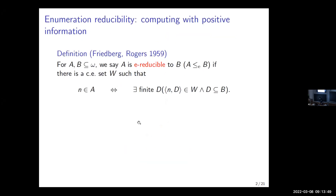So we need to talk first about what is enumeration reducibility, so I'll try to give an introduction in case you haven't seen this before. For A and B subsets of omega, we say that A is enumeration reducible to B if there is a c.e. set W — which we think of as an enumeration operator — such that N lies in A if and only if there is some finite set D such that the pair N comma D lies in W and D is a subset of B.